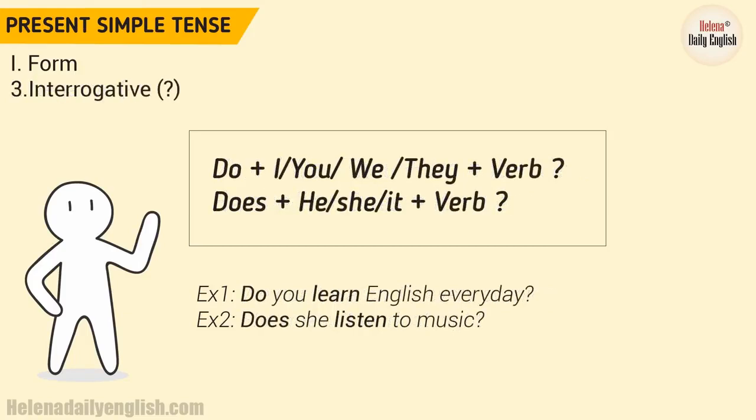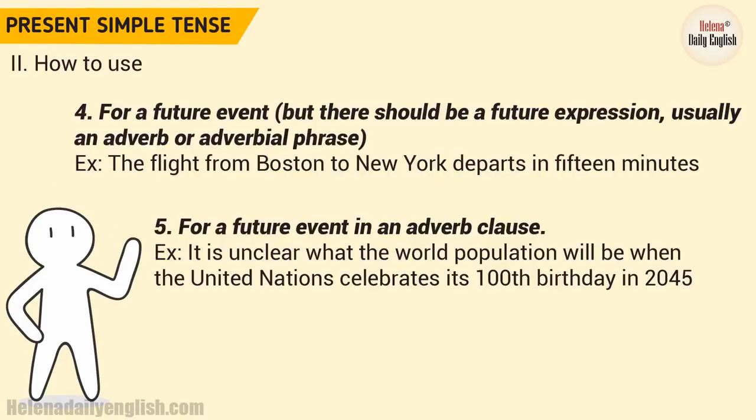3. Interrogative. Do plus I, you, we, they plus verb. Does plus he, she, it plus verb. Example: It is unclear what the world population will be when the United Nations celebrates its 100th birthday in 2045.